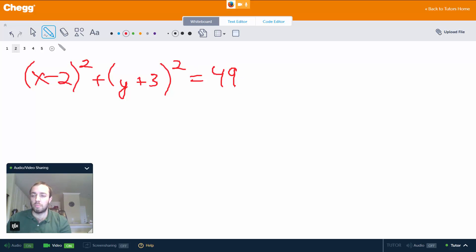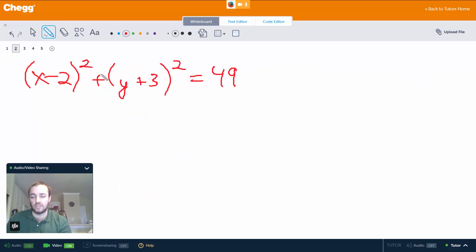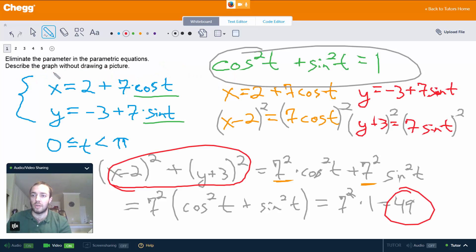So (x - 2)² + (y + 3)² = 49. So that's one part of the problem — eliminate the parameter in the parametric equations. Well we did that, and the result is (x - 2)² + (y + 3)² = 49. And then describe the graph without drawing a picture.